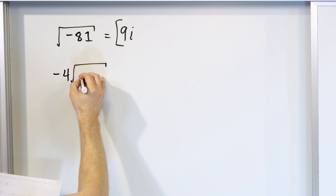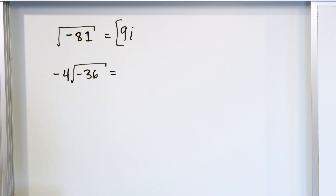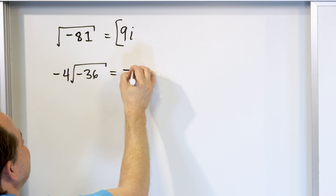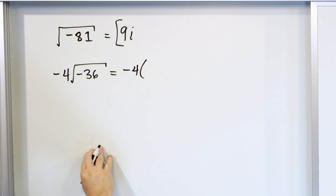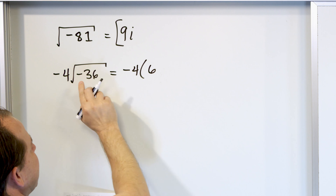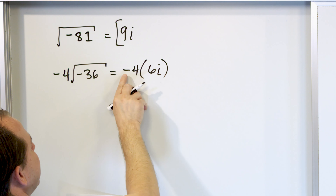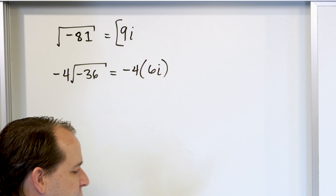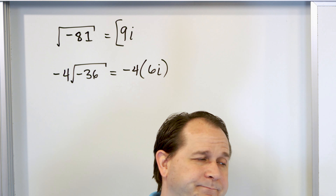If you remember, the imaginary number i is defined to be the square root of negative 1, and because of that, if I square both sides, when you have i squared it is equal to the real number negative 1. Both of those facts are equally important. You need to know that i is the square root of negative 1, and also that i squared equals negative 1. Let's crank through a bunch of problems and you'll see why you need to understand both.